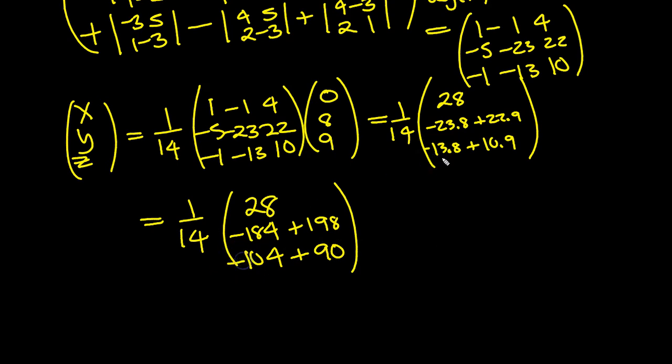8 thirteens, 80 and 8 threes are 24. 80 and 24 is 104. You can tap them in the calculator if you need to, of course. Plus 90. Ah, there's a minus here. Minus 104, wasn't there? So that's equal to then, 1 over 14. We're left with 28. -184 plus 198 is 14. And this one is -14, which looks good.